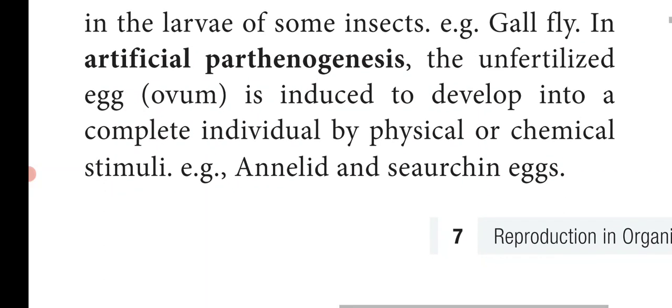Next, we will see Artificial Parthenogenesis. In Artificial Parthenogenesis, the unfertilized egg or ovum is induced to develop into a complete individual by physical or chemical stimuli. It is called artificial because the Parthenogenesis does not occur naturally but is induced. Example: Annelida and Sea Urchin eggs.